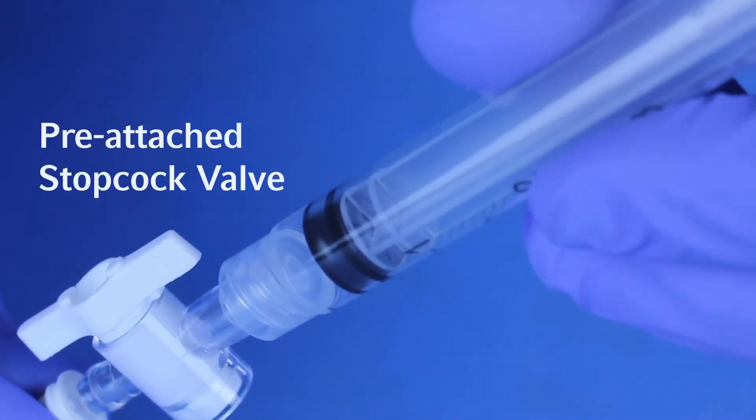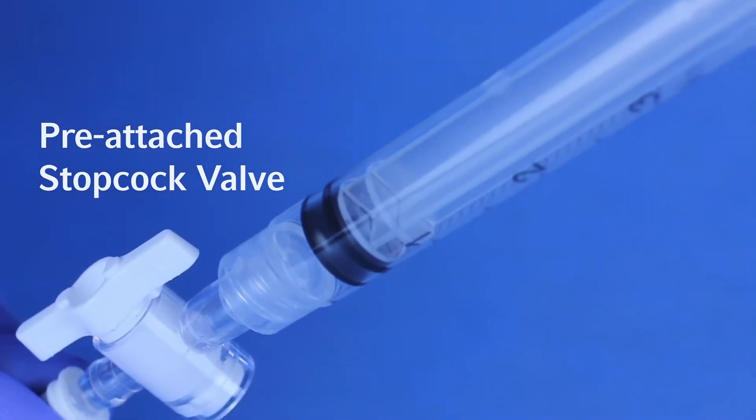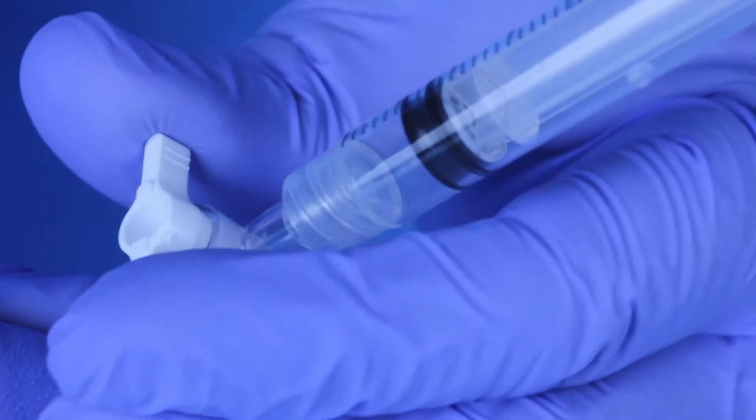Connect syringe to balloon port on catheter. The balloon port can be identified by its pre-attached stopcock valve. Test balloon by inflating with air.